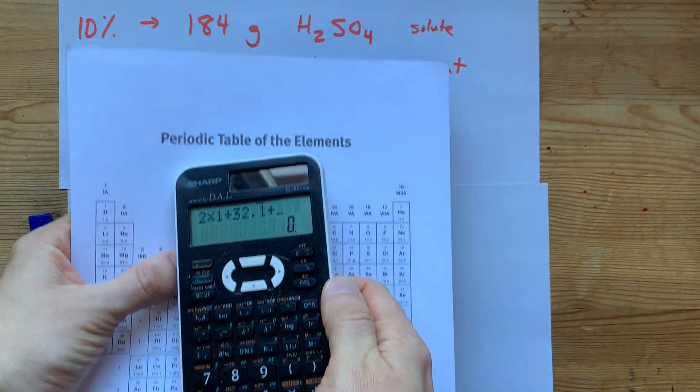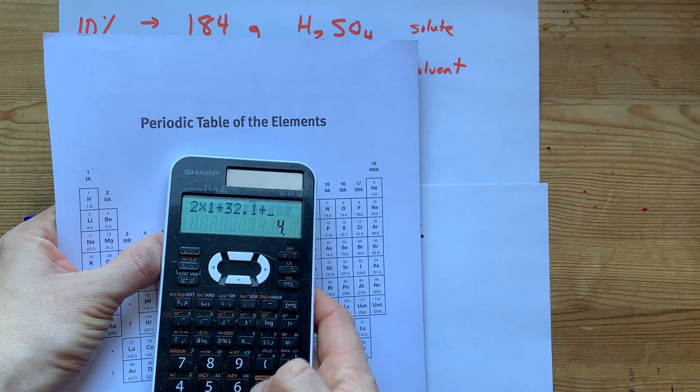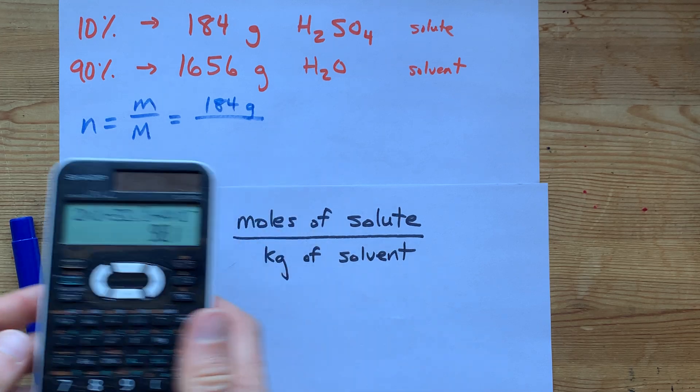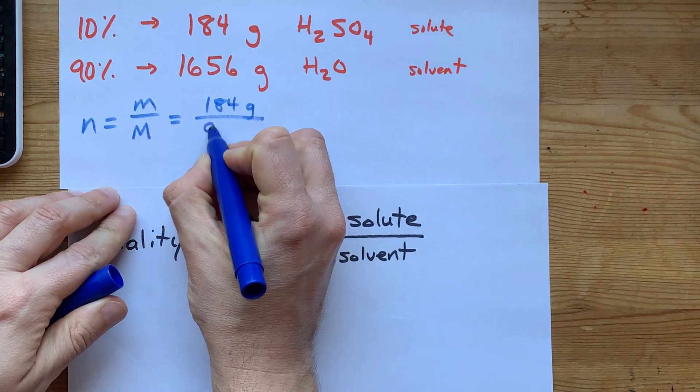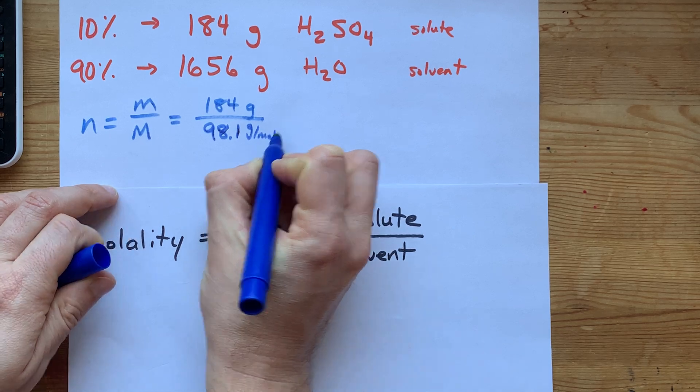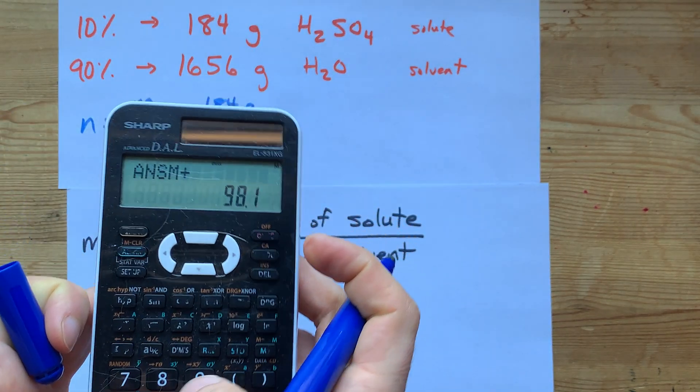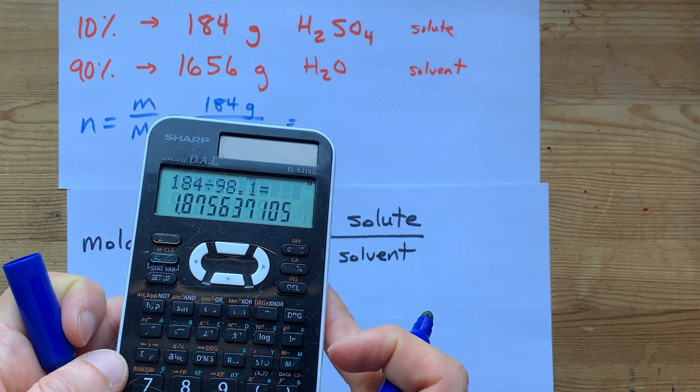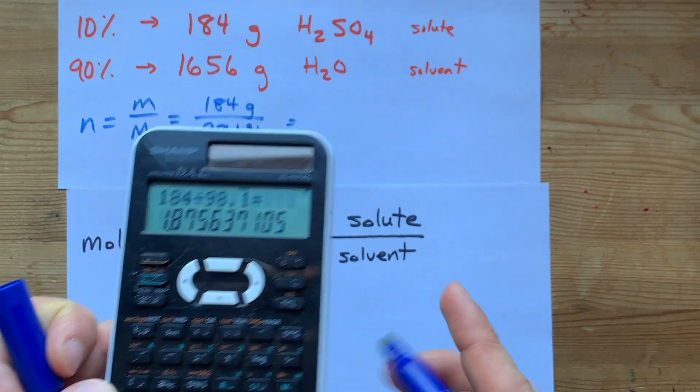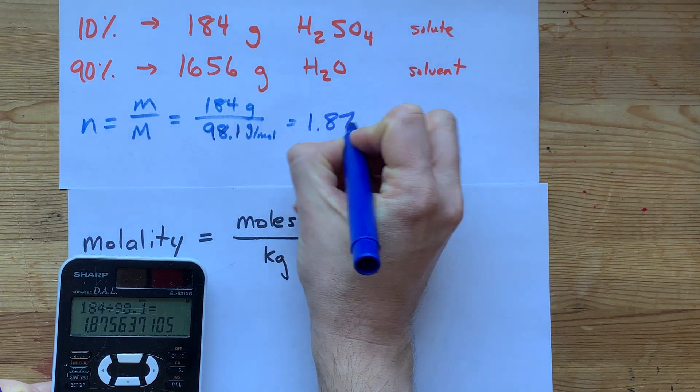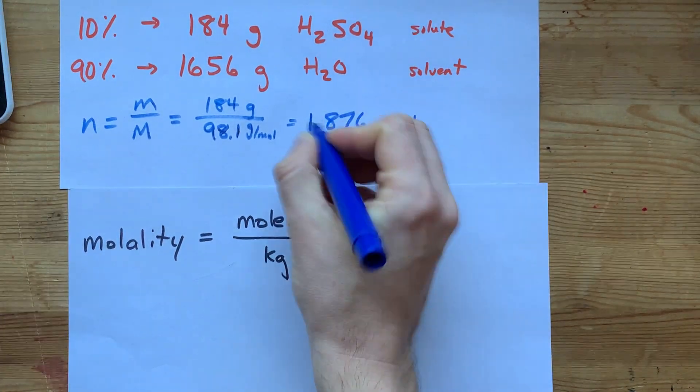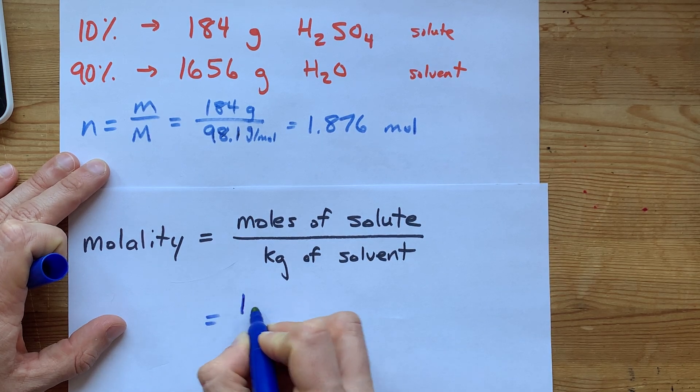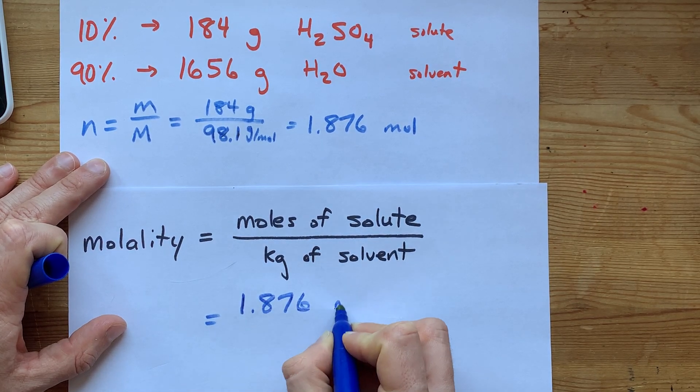And we have four oxygens in that formula. So, I'm going to add on four 16s. My molar mass here is 98.1, 98.1 grams per mole. All right. 184 divided by 98.1 gives me 1.876 moles. So, that's the number that goes on the top of the molality calculation. 1.876 moles.